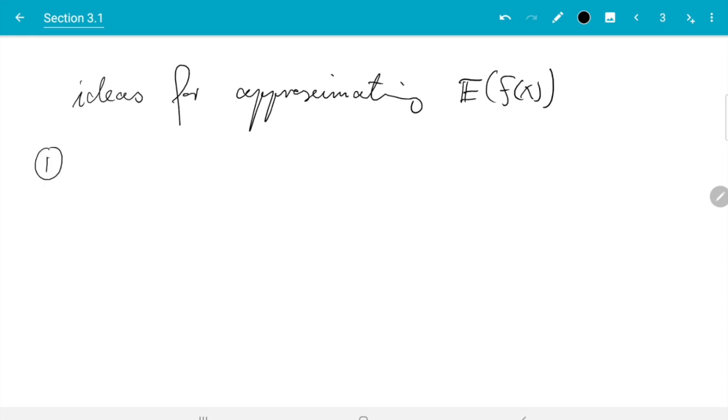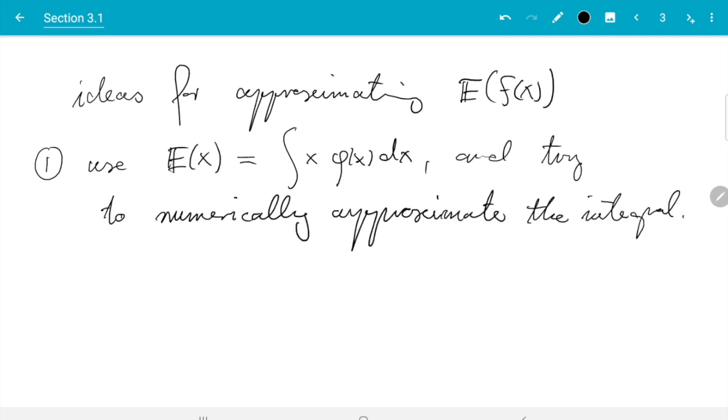So f is now any function, and we'll see examples later. So idea one is use expectation x, what we wrote first, integral x phi of x dx, where phi of x is the density. And try to numerically approximate the integral.